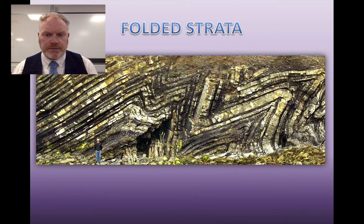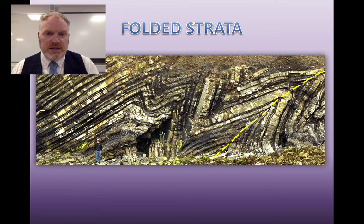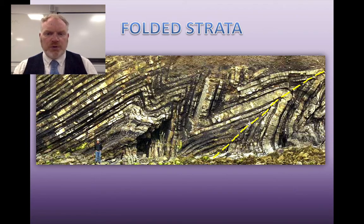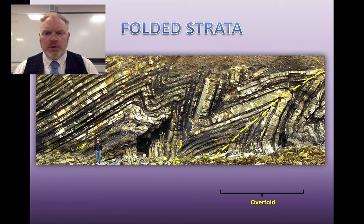Let me show you an example. We can see there's a pretty obvious hinge point there. I've joined together the hinge points on different beds with a line — that forms the axis of that fold. I'd then like you to label each of these folds and identify what type they are. I've put a little bracket where this fold is, and this is actually an overfold. Think about why I've identified that particular fold as an overfold.